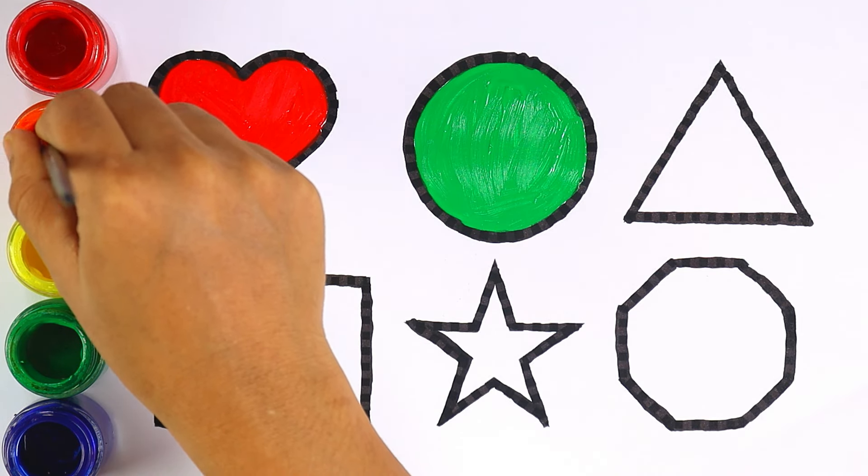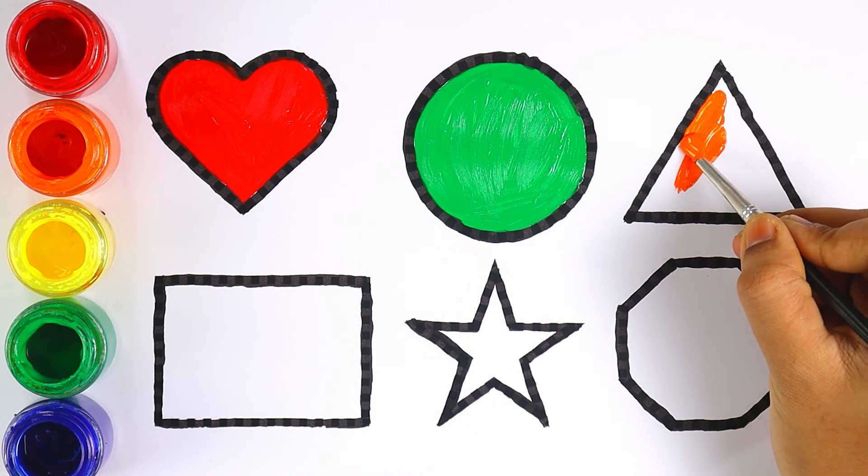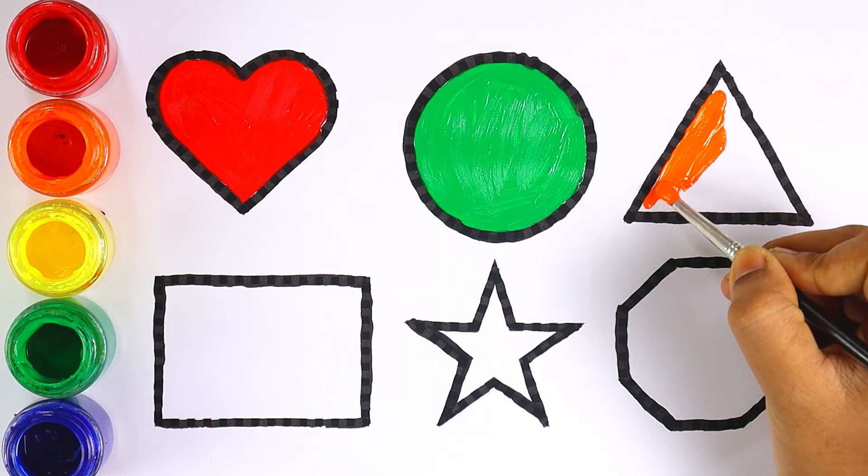Let's move on to the next shape which is triangle. I am coloring triangle with orange color.